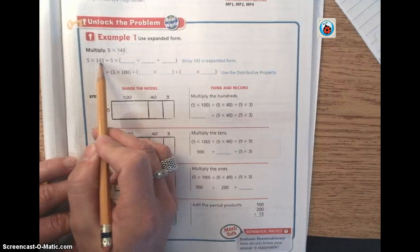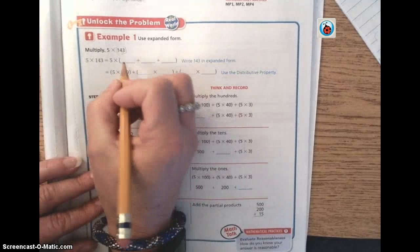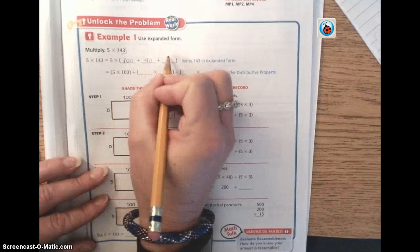And we're going to break it into hundreds, tens, ones. So if we take 143, we're going to break it into 100 plus 40 plus 3.